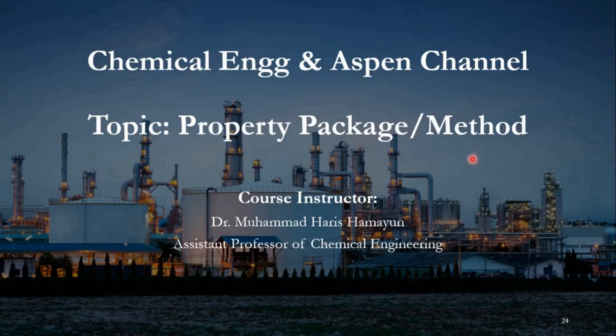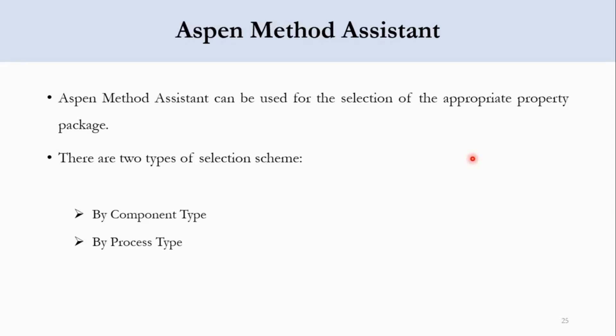Hello everyone, welcome back to Chemical Engineering and ASPEN channel. At the end of the previous lecture, we said that there is an ASPEN method assistant which we can use to set an appropriate property package. Today we are going to see that. There are two types of selection scheme: number one is by component type, and number two is by process type.